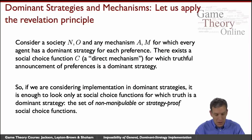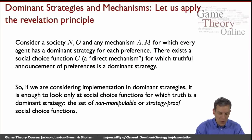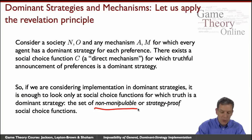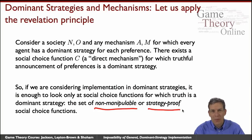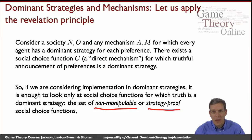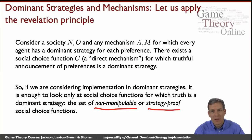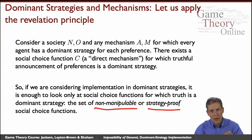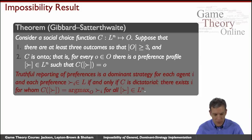Now we want to think about which social choice functions are going to be dominant strategy truthful. These are also known as non-manipulable, strategy-proof, or sometimes straightforward mechanisms. The important result in this area, due to Alan Gibbard and Mark Satterthwaite in the early 1970s, says we're going to have a really hard time doing this in a setting where people can have any possible ranking over the alternatives.